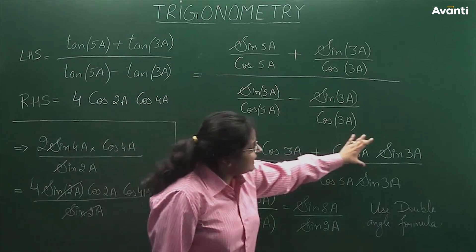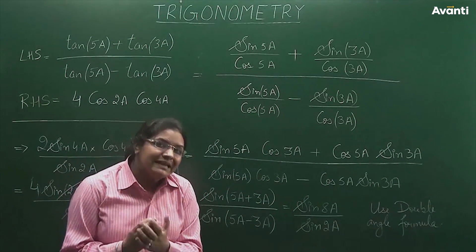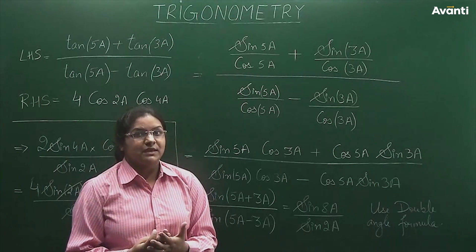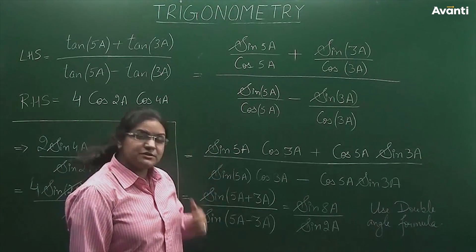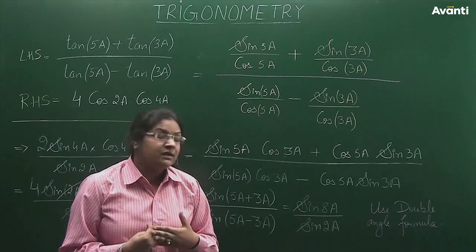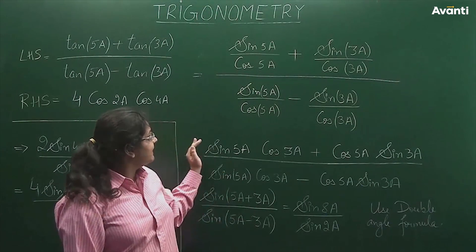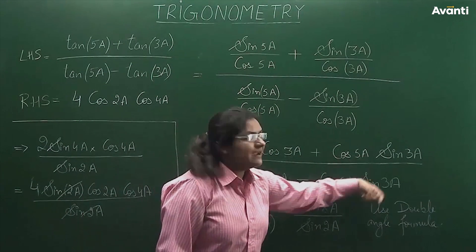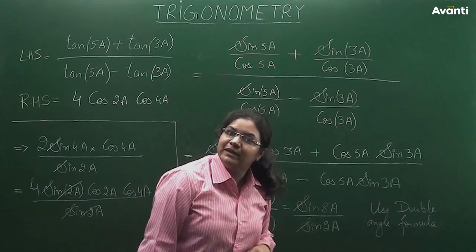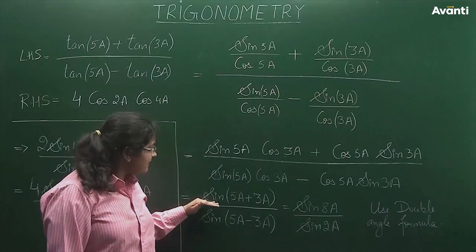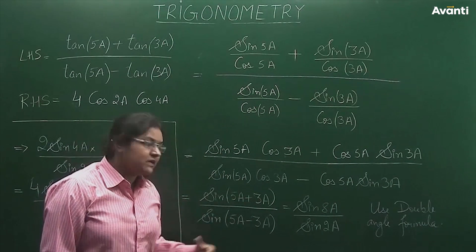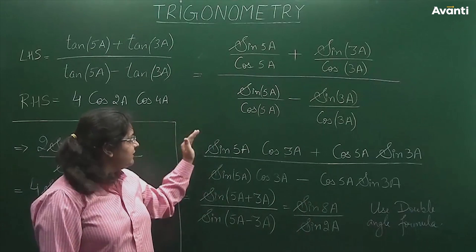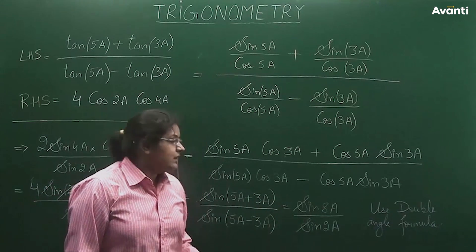If you look at this expression, it will feel very familiar because it has been studied many times. The numerator is nothing but the expression for sine of (a+b), written as sine(a)·cos(b) plus cos(a)·sin(b). So I can write it as sine of (5a + 3a), which is sine of 8a.